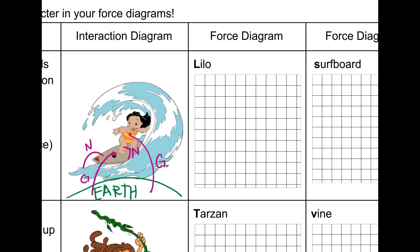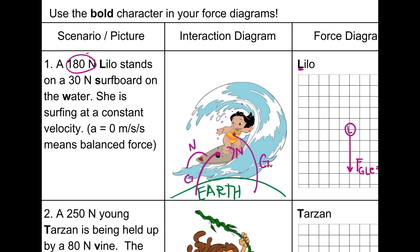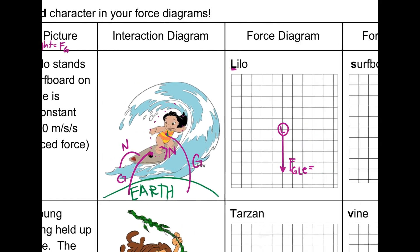Now for the force diagram — if Lilo is our center, we see that there are two interactions happening with her. We're going to draw our force diagram using L as our center. She has a force of gravity — the feeler is Lilo and it's happening with the Earth. This is going to be her weight — weight is your force of gravity, and she weighs 180 newtons.